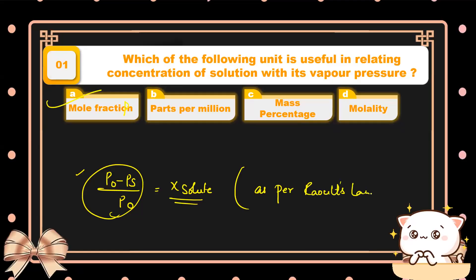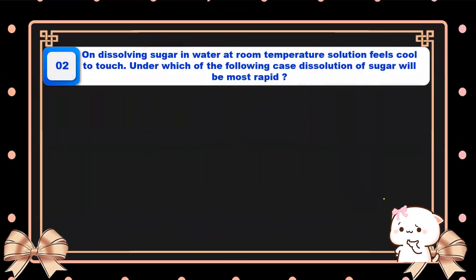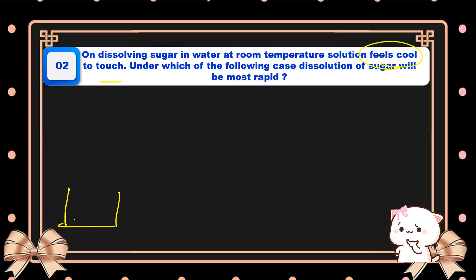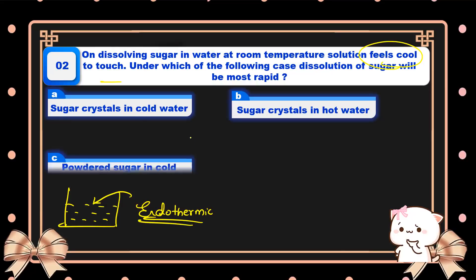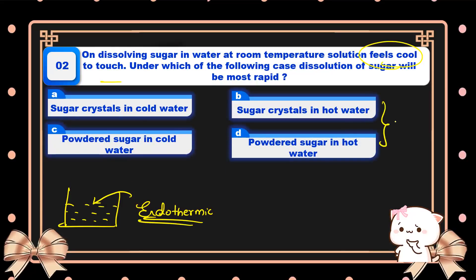Question number two: on dissolving sugar in water at room temperature, the solution feels cool to touch. Under which of the following conditions will dissolution of sugar be most rapid? When we put sugar in water and it feels cool, it absorbs heat from the surroundings — that is an endothermic process. For an endothermic process, hot conditions are always favorable, so hot water is favorable.